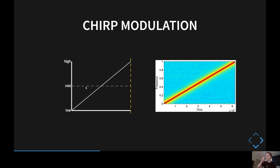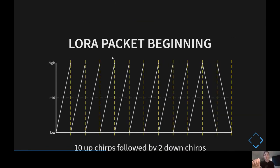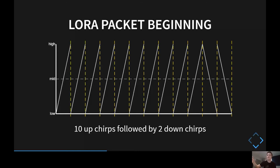For LoRa, the frequency is region dependent. In Europe, we typically use 868 MHz, but in the Americas and Asia different frequencies are used. The bandwidth varies as well. For a given signal, we start at a low frequency and go to the highest — this interval is the bandwidth. LoRa sends messages as packets. Each packet starts with 10 up-chirps — going from low to high frequency — followed by two down-chirps, covering the entire bandwidth.